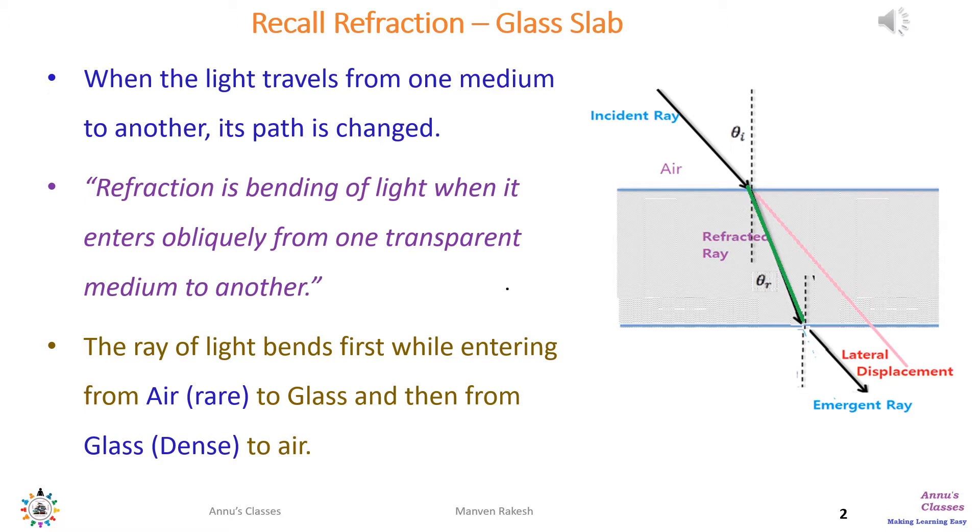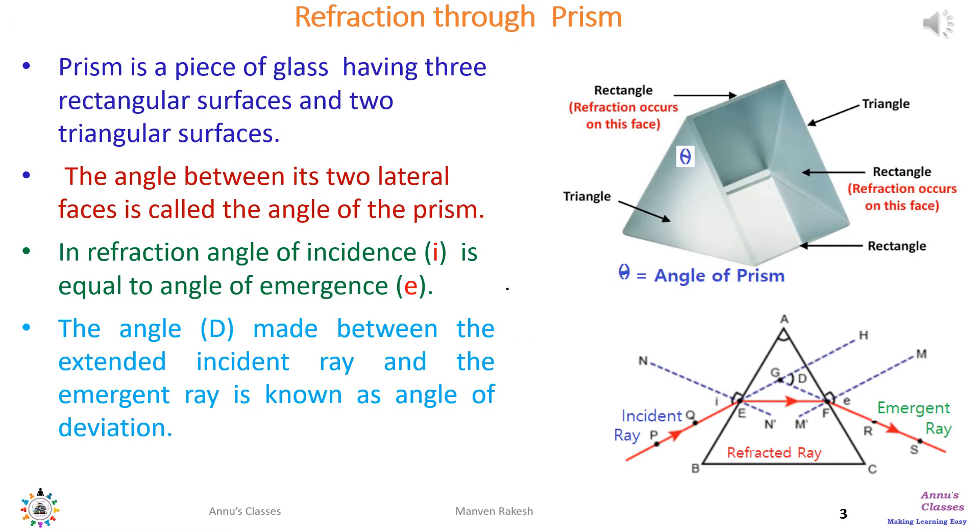A prism is a piece of glass having three rectangular surfaces and two triangular surfaces, as shown in the figure. The angle between the two lateral faces is called the angle of prism, which is marked as theta in the figure.